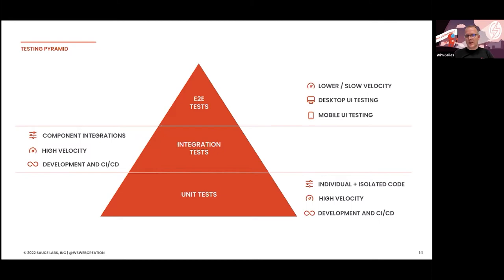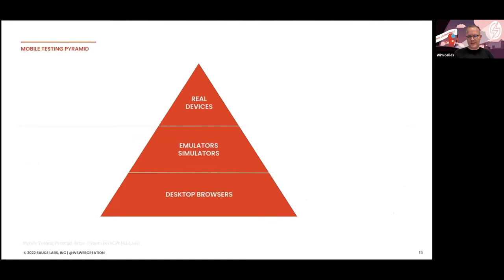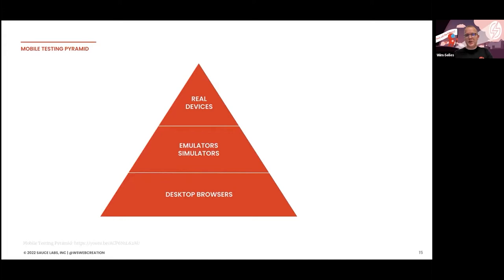A few years ago, a good friend of mine, Kodin, came up with the mobile testing pyramid — and there's a YouTube link we'll share later with the original talk. The basics of the mobile testing pyramid are that it can be divided into multiple layers: desktop browsers, mobile devices, and mobile apps. The desktop browser layer covers mobile web applications or the hybrid part of hybrid applications. In that layer, you do automated testing, manual testing, and mobile simulation, with high velocity.